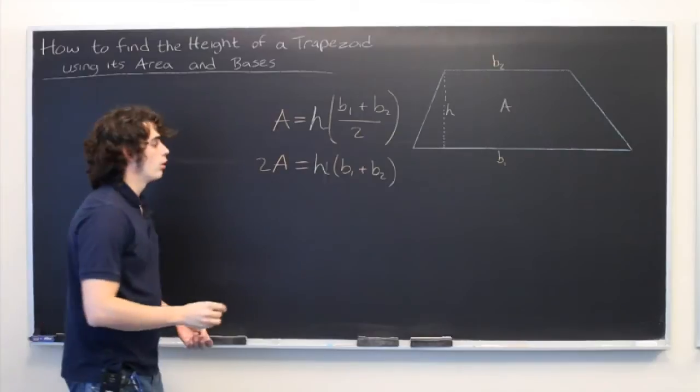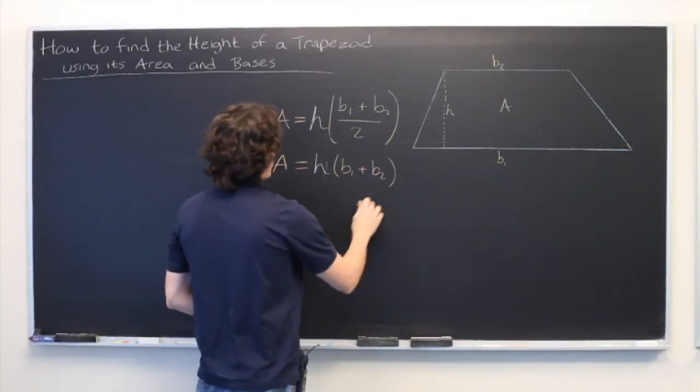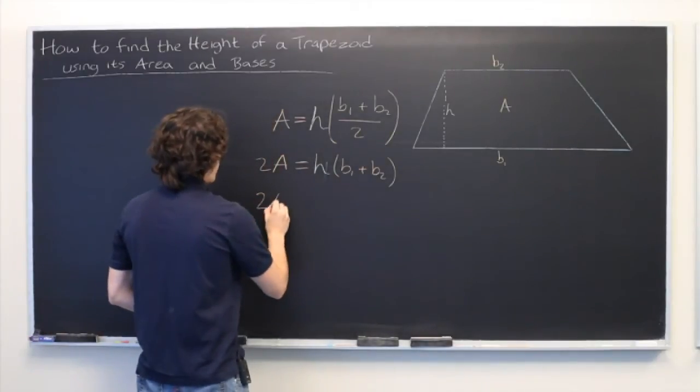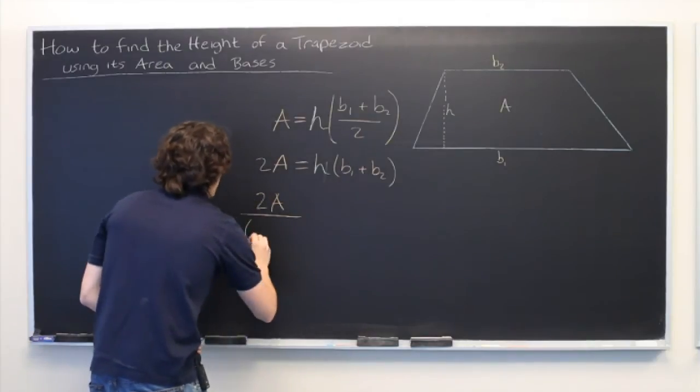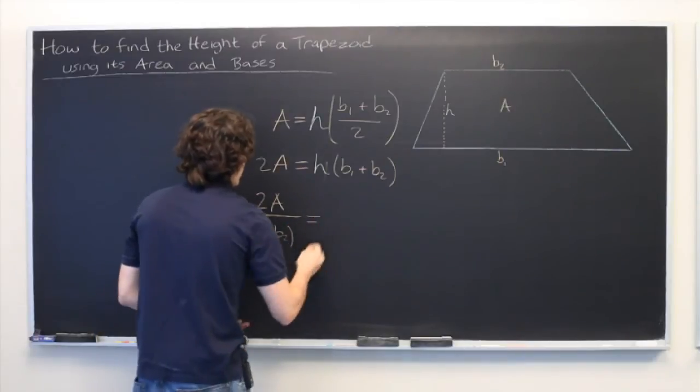Now from here, we can divide on both sides by this quantity, and what we get is 2A over B1 plus B2 equals H.